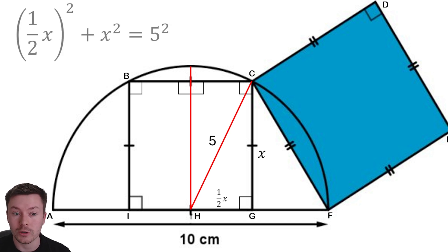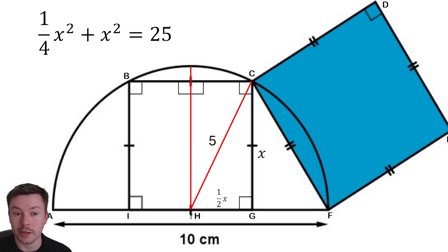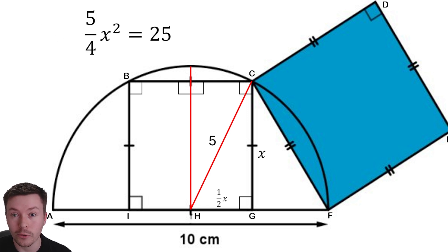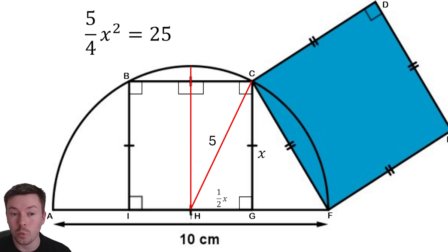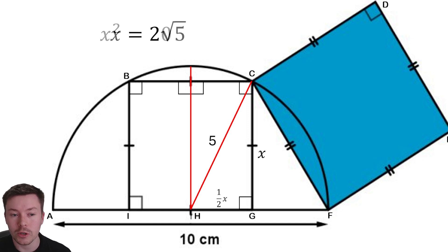Because I to H equals H to G, then H to G is half the length of the square, so that must be half X. We then have a right-angle triangle, so we use Pythagoras: (½x)² + x² = 5². That gives us ¼x² + x² = 25, and collecting like terms: (5/4)x² = 25. Multiplying both sides by 4 gives 5x² = 100, then dividing by 5 gives x² = 20. Square-rooting both sides, x = 2√5.